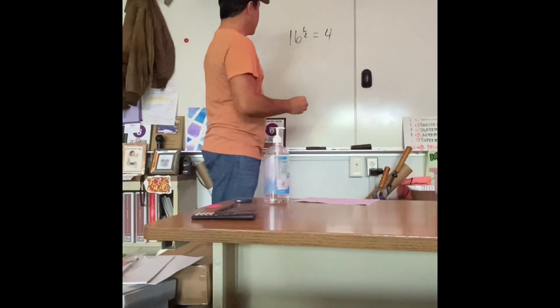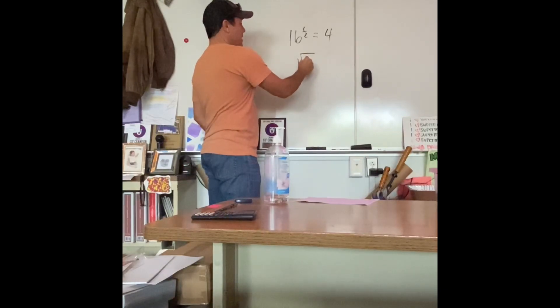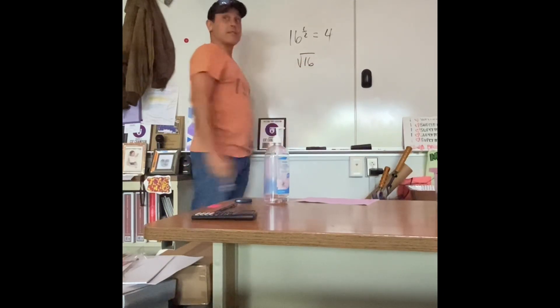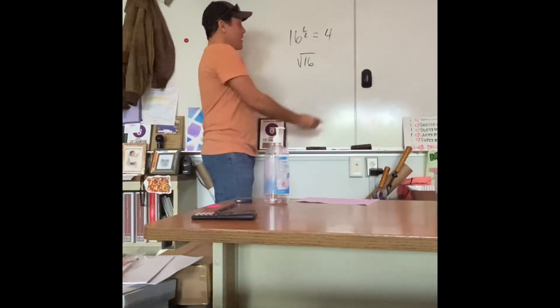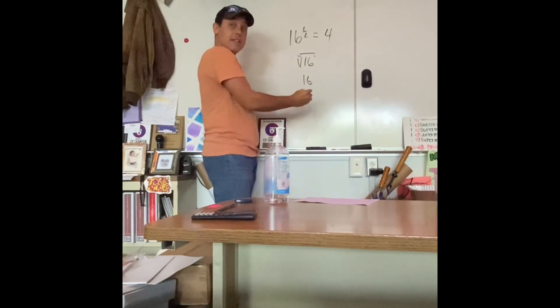So, what does that mean? 16 to the 1 half is 4. Isn't that the same thing as the square root of 16? Yep. What exponent goes here? We all know there's an invisible one. And what number goes here? They don't tell you this in middle school. There's really a 2 for square root. So, isn't the square root of 16, 16 raised to the 1 half?